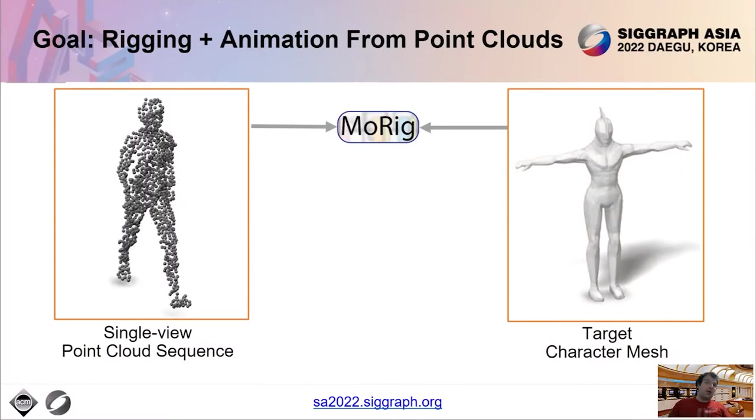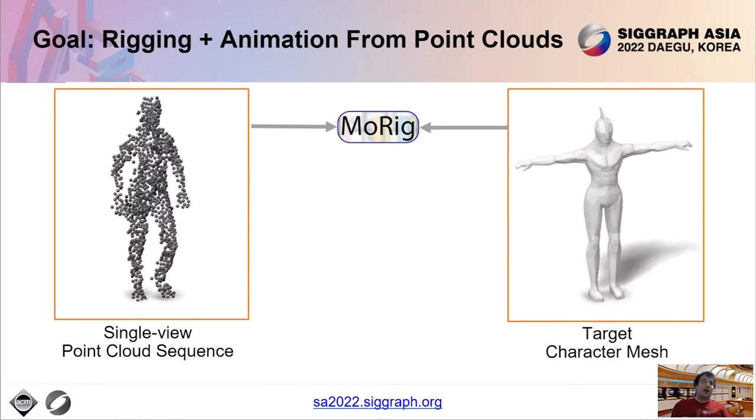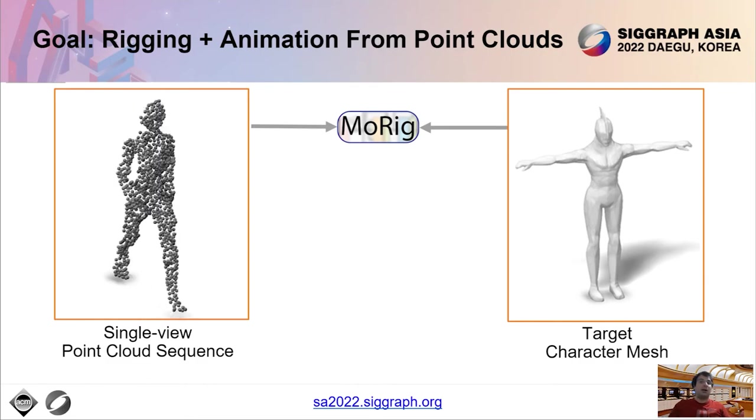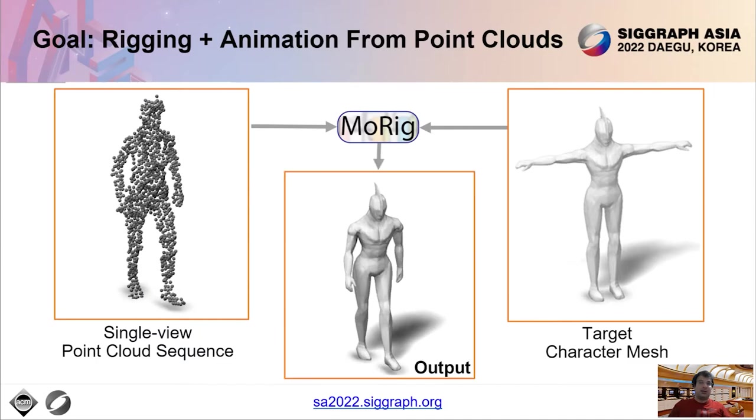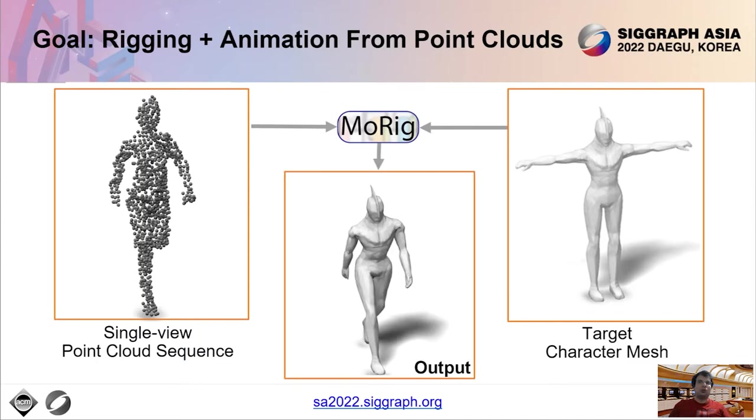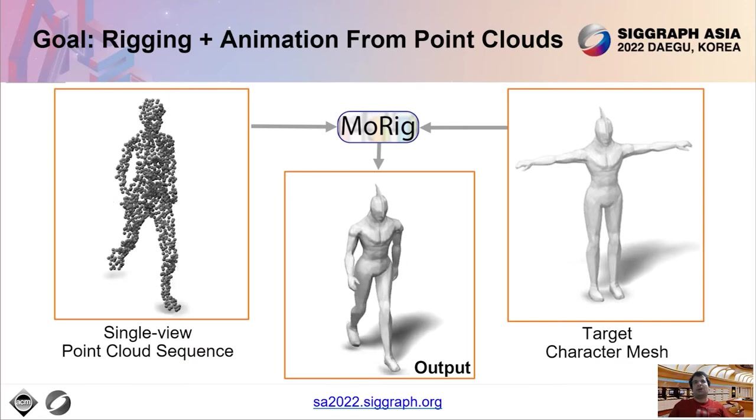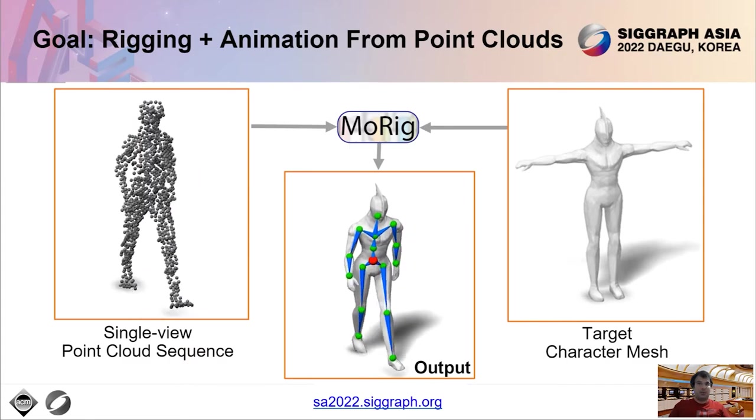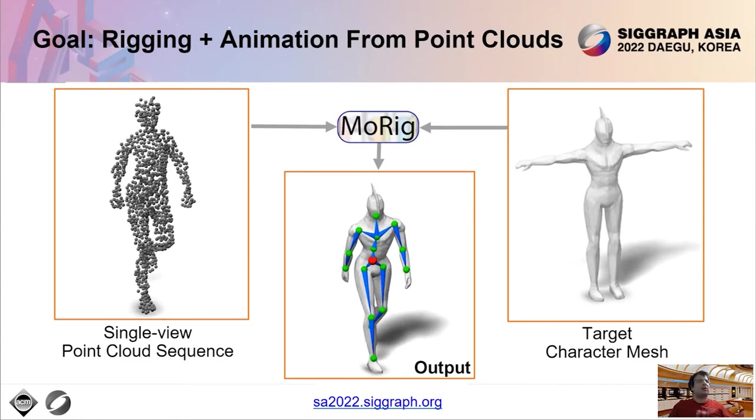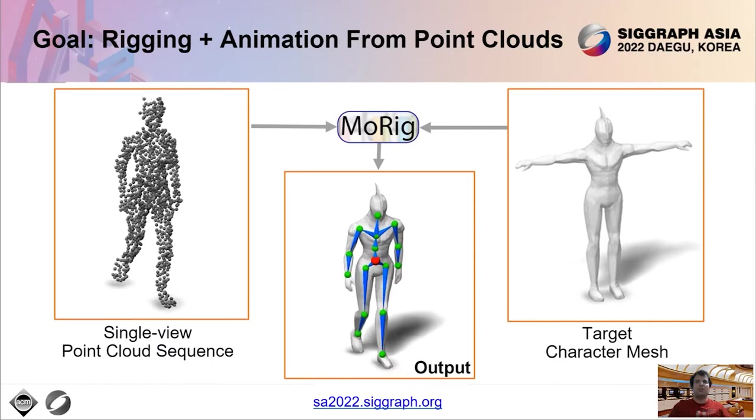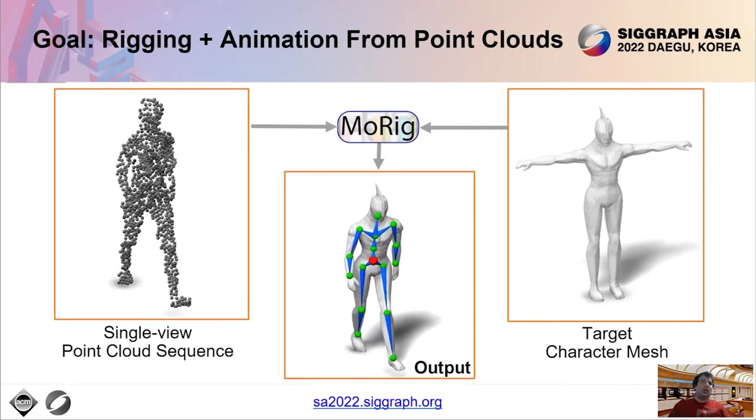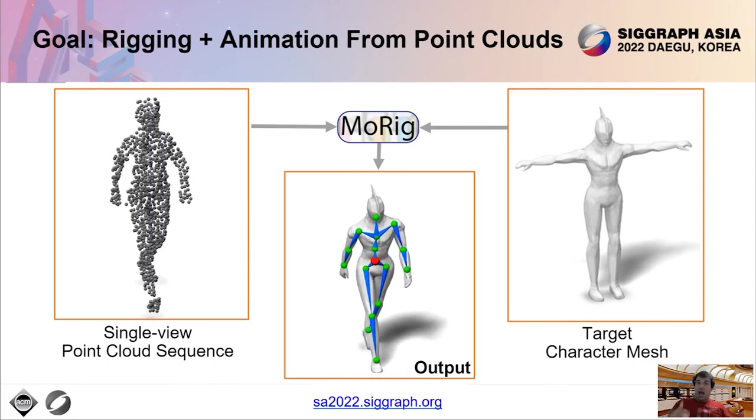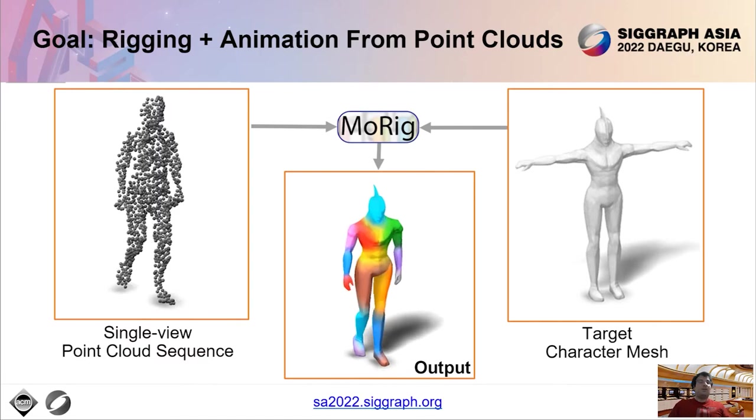The goal of MoRig is to transfer motion from a performing character captured in a single-view point cloud sequence to a target character mesh. MoRig animates the target mesh according to the point cloud motion, as you see here. The motion transfer is achieved by inferring an appropriate 3D rig for the target mesh and controlling it such that the target mesh follows closely the motion captured in the point cloud. The output rig includes both skeleton that you see here animated on the bottom, as well as skinning weights visualized here.